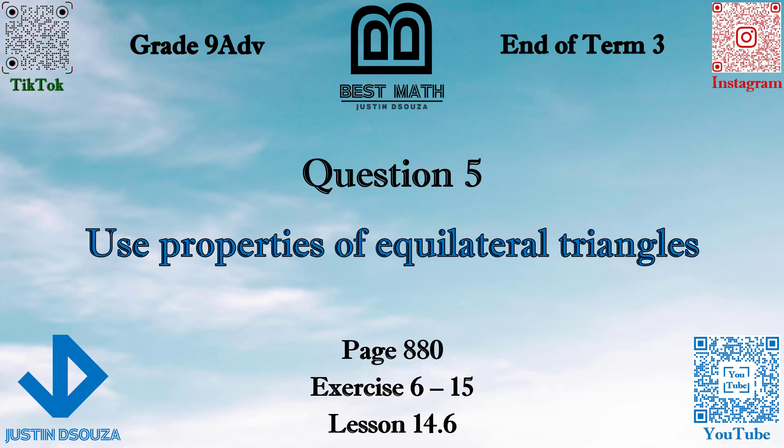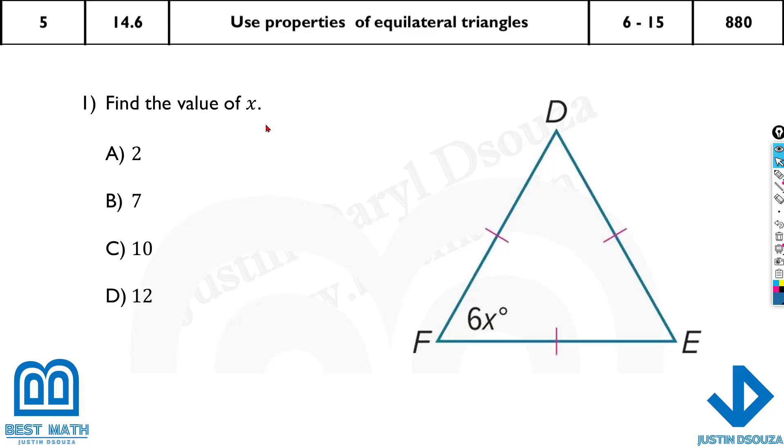In this question we will use properties of equilateral triangles. There are also problems involving isosceles triangles in this topic. Here we have to find the value of x. The topic heading is of equilateral triangles but they should tell you in the figure, otherwise you can't just assume it. Now here you can see they have told all the three lines are equal. That means it's equilateral.